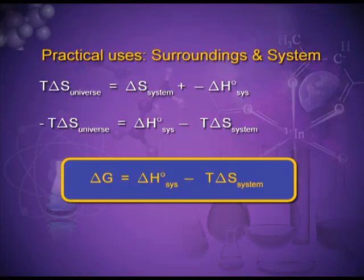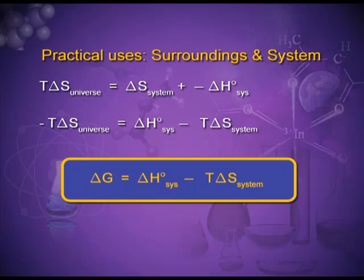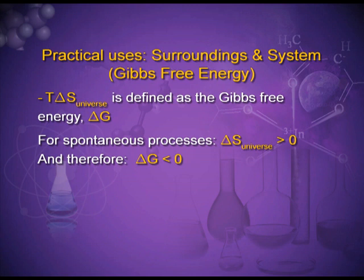Another thermodynamic function, Gibbs free energy, denoted by capital G, correlates entropy and enthalpy as: delta G equals delta H of the system minus T times delta S, where delta H is the change in enthalpy, T is temperature, and delta S is the change in entropy. Gibbs energy is also a state function — it depends upon the initial and final state of the system and not on the path. It is also an extensive property, depending upon the amount of matter in the system. For a spontaneous process, delta G should be less than zero — its value should be negative.